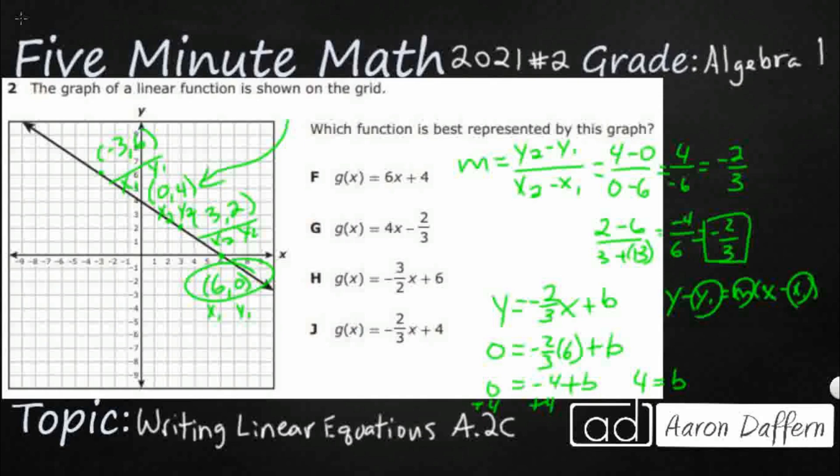Now, so our answer here is going to be this negative two thirds x plus four. I said you can do this in about three seconds. Look, it's a negative slope because it's going down, which means it can't be F, can't be G. Y intercept is four. So my answer is J.